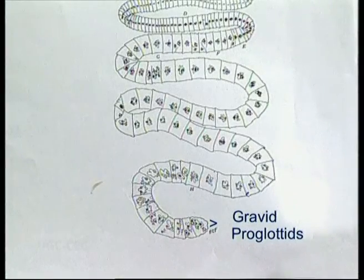Gravid proglottids are larger and can contain a large number of eggs. A single specimen can lay at least one million such eggs, which are passed out along with the feces to the outside. Once they reach outside, these feces are devoured by different organisms. If they are near the water, we see that Cyclops usually take them — Diaptomus and others, which are crustaceans — they may devour these eggs. When these eggs reach the water, they form small ciliated structures known as the coracidium. This coracidium swims in the water.